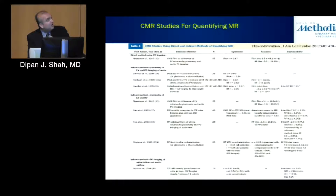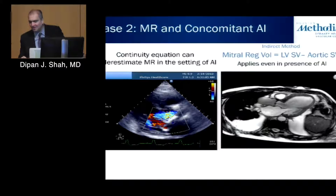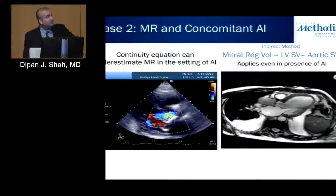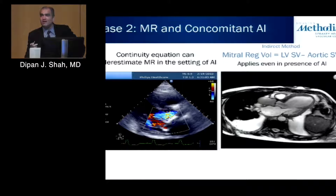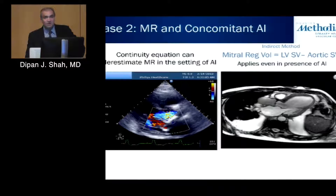There are numerous studies in the literature over the last 20 years showing fairly good correlation both with echocardiography and with cardiac catheterization assessments of mitral regurgitation severity. CMR is also helpful in the setting of mixed lesions — mixed aortic and mitral regurgitation. With the methodology comparing LV stroke volume to aortic outflow, the difference holds true irrespective of the amount of aortic insufficiency, because AI increases both LV stroke volume and aortic forward flow, so it essentially cancels out. MR quantitation remains valid in this setting.